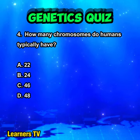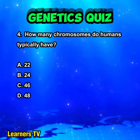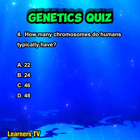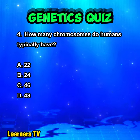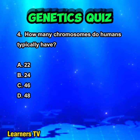How many chromosomes do humans typically have? A. 22. B. 24. C. 46. D. 48.